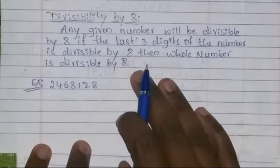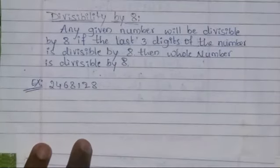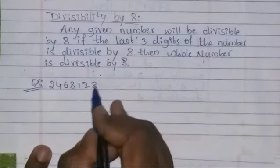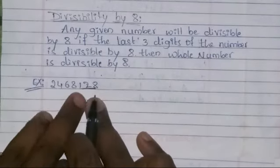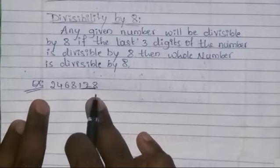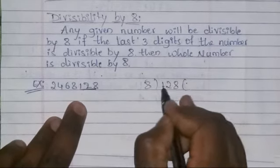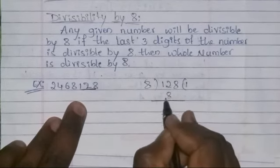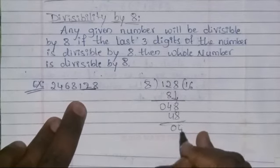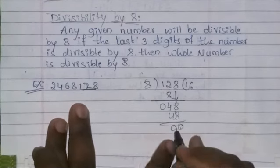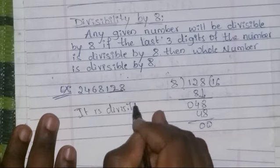In case of divisibility by four, we check the last two digits of the number. But for divisibility by eight, we check the last three digits. Let's check: is 128 divisible by eight? We divide 128 by eight — eight into twelve gives one remainder four, bringing down eight gives forty-eight, and eight into forty-eight gives six with remainder zero. Since we get zero, the last three digits are divisible by eight, so the whole number is divisible by eight.